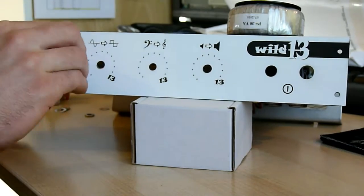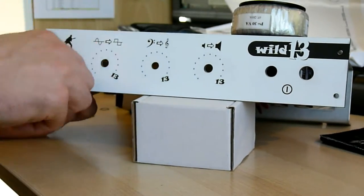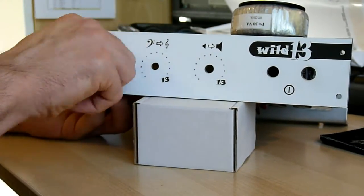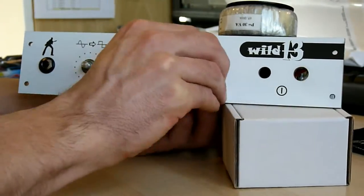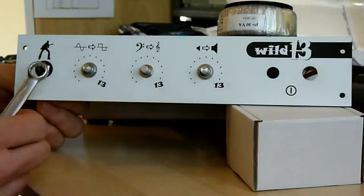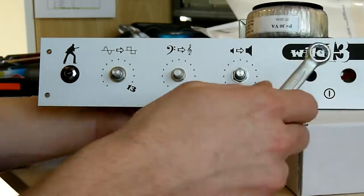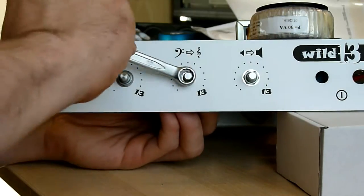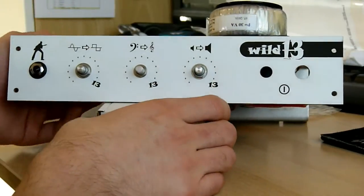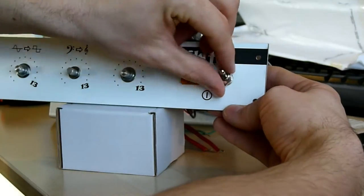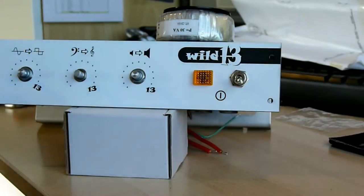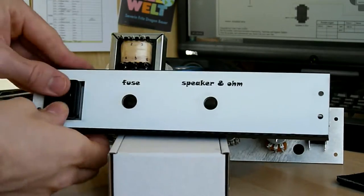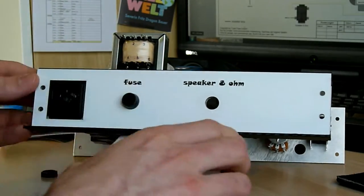It's time for our front plate. I'm mounting the inputs, the potties, the status light and the power switch. On the back we have the power plug, a fuse and the output jack.